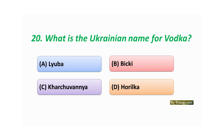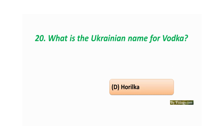Now let's go to the last question. Question number twenty: What is the Ukrainian name for vodka? Option A: Luhansk. Option B: Horilka. Option C: Hersupernia. Option D: Orilka. The correct answer is Option B: Horilka.